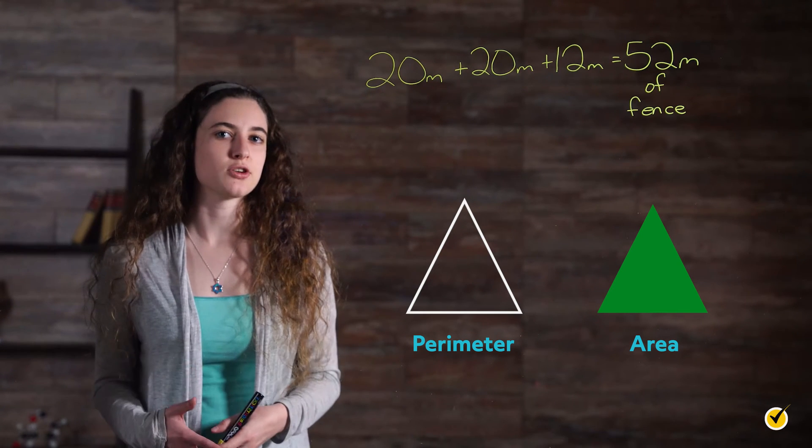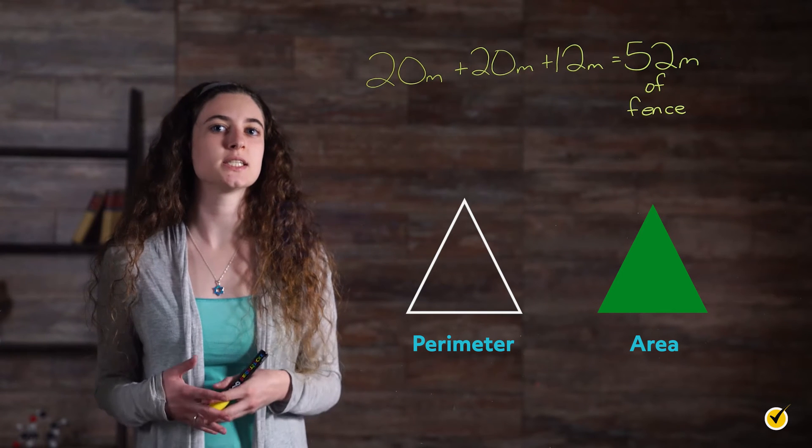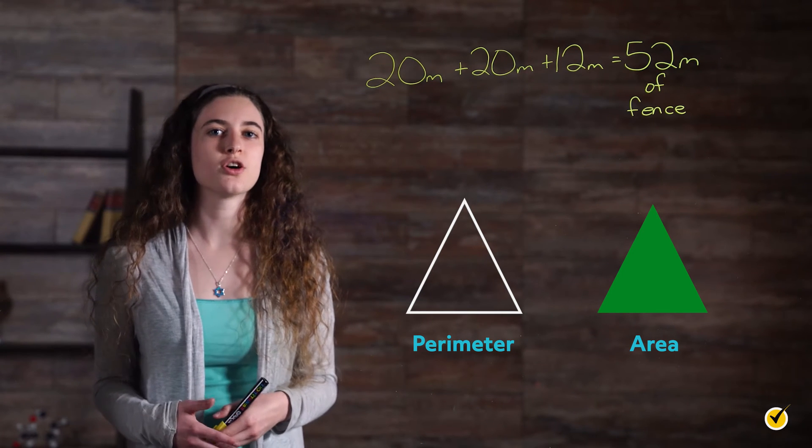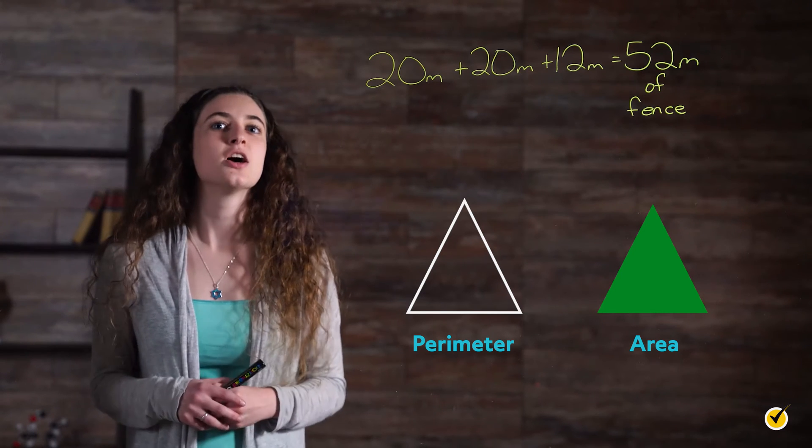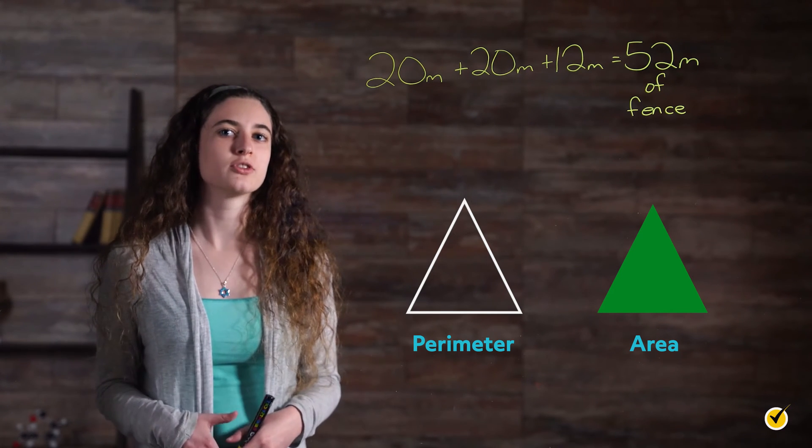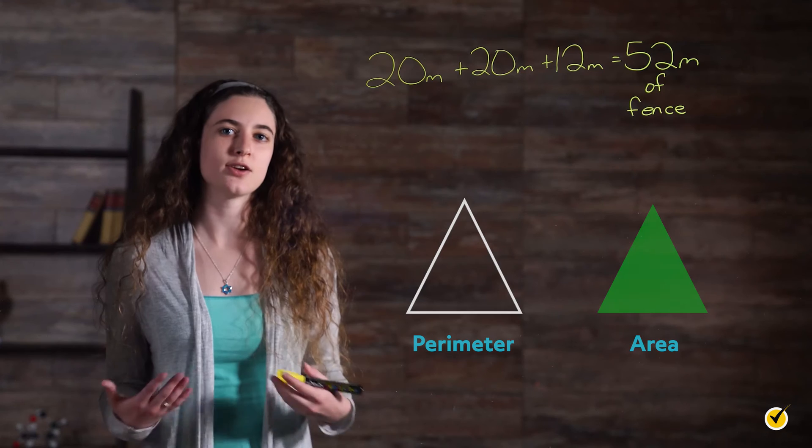Notice that the answer is given in meters. That's because perimeter is a distance. Walking around the yard would mean walking 52 meters. That's all there is to it. No matter what type of triangle you have, just add up the length of the sides and you have your perimeter.